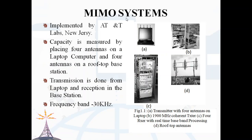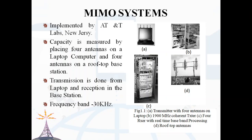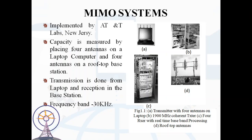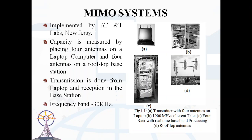MIMO — multiple input, multiple output systems — was first implemented by AT&T Labs, New Jersey. Initially, they performed some field tests to characterize the mobile MIMO radio channel. The company measured the capacity of a system by placing 4 antennas on a laptop computer and 4 antennas on a rooftop base station. Transmission was done from the laptop and reception at the base station, and they observed a 4-fold increase in capacity when compared with a single antenna system.